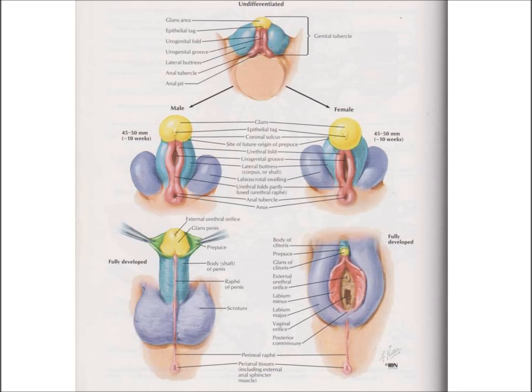Our genitals develop to work as female anatomy or male anatomy from an undifferentiated base. Did you realize that we all started out neuter? This change into a boy or girl happens in the first weeks of our development inside of our mothers. Here you can see the male on the left and the female on the right, with similar tissues shown in matching colors.